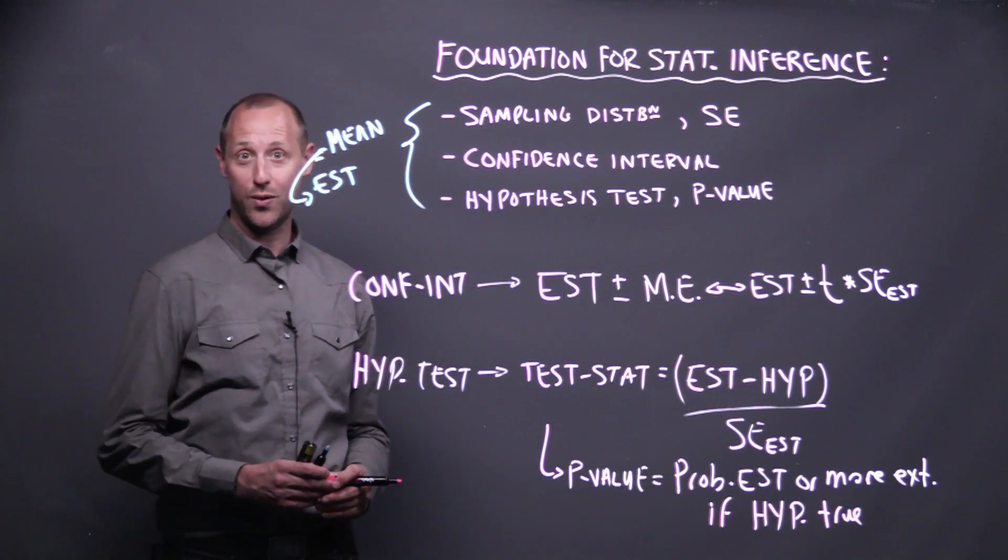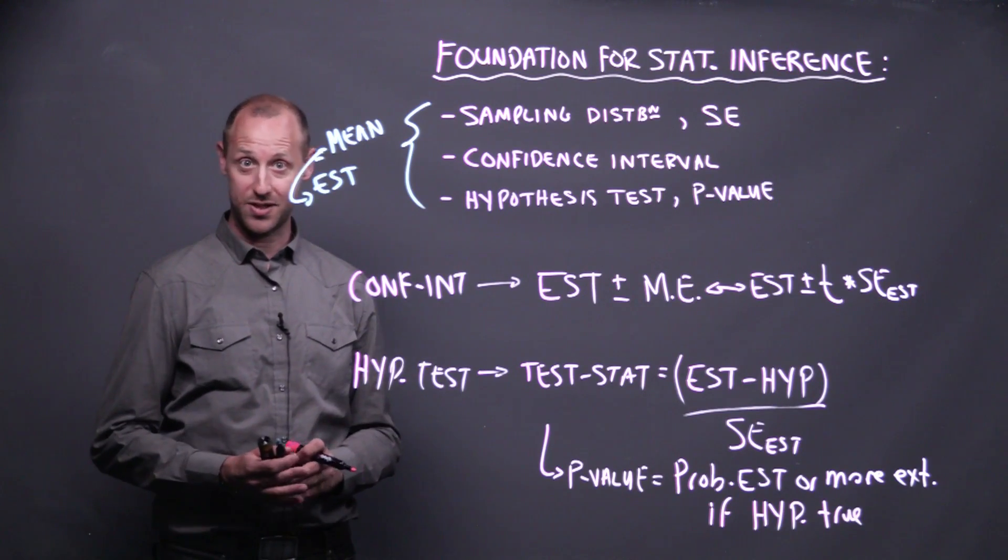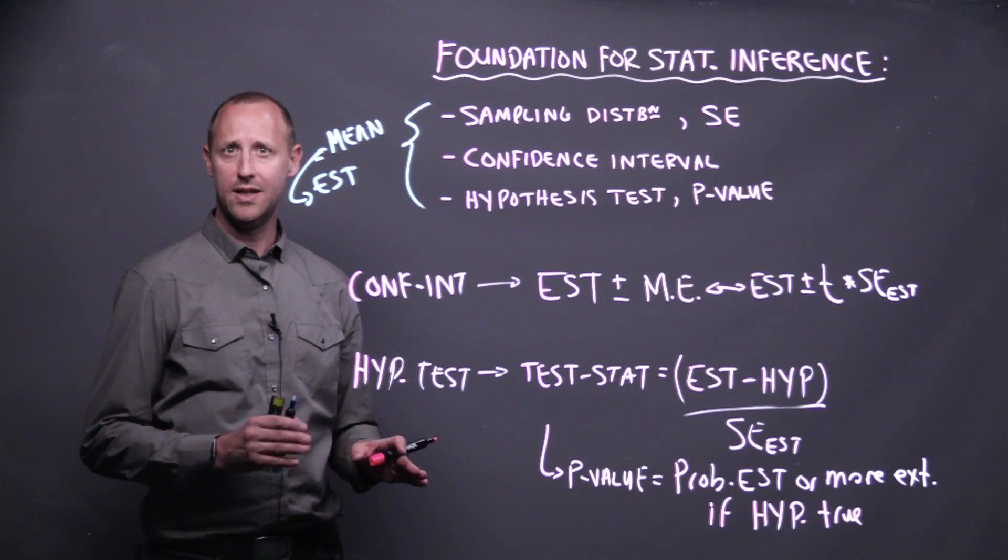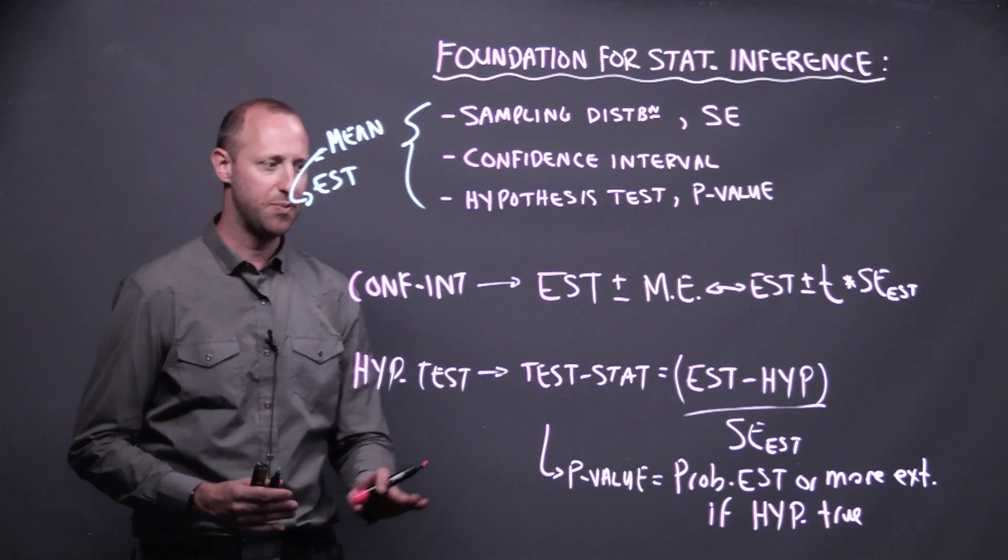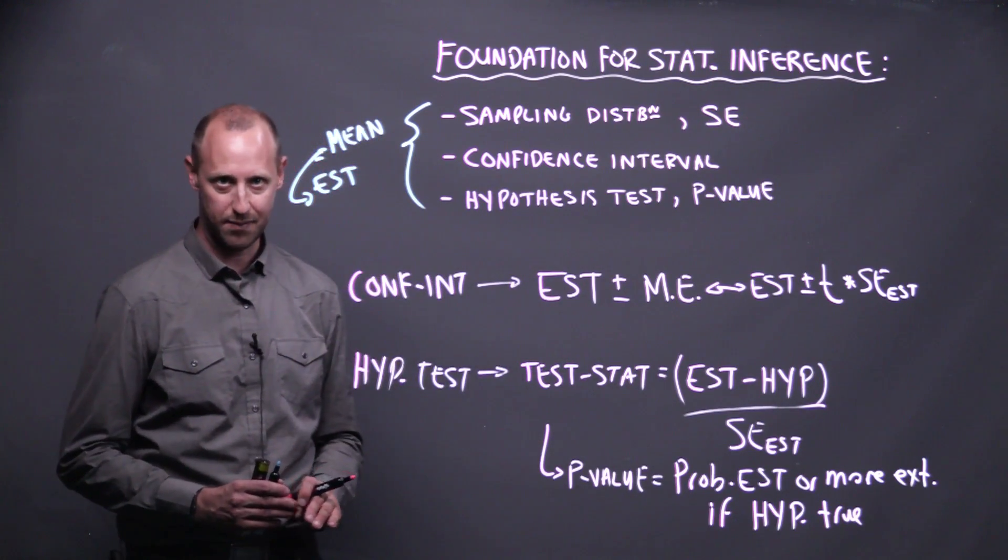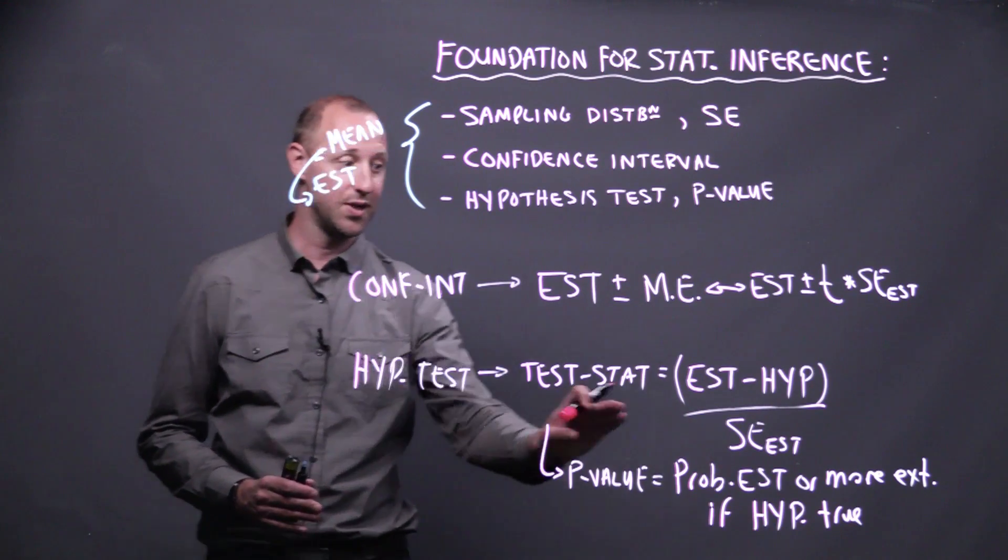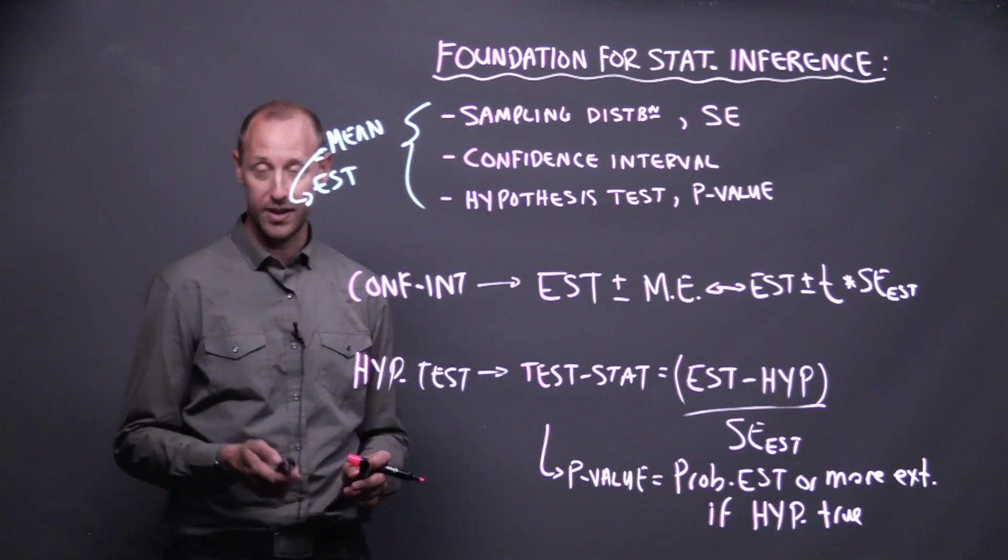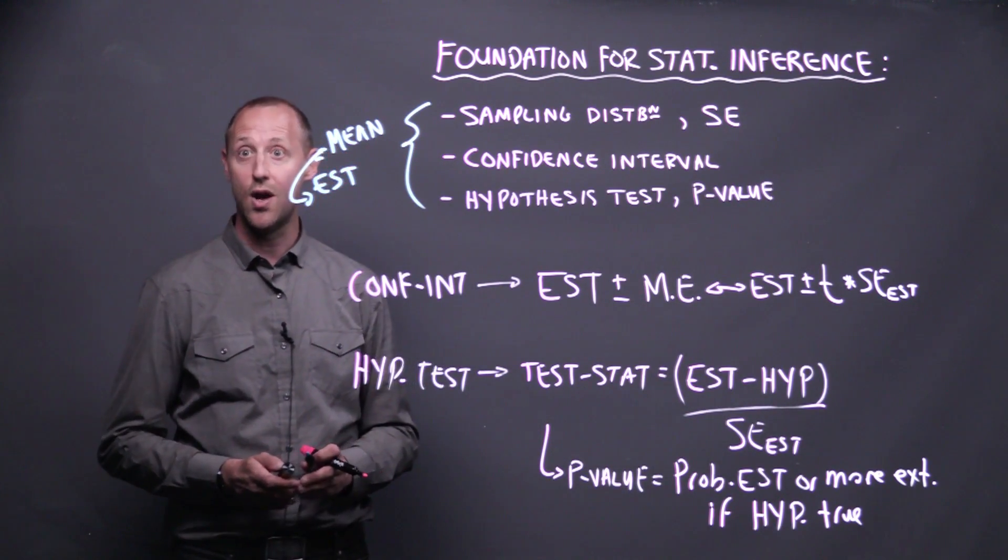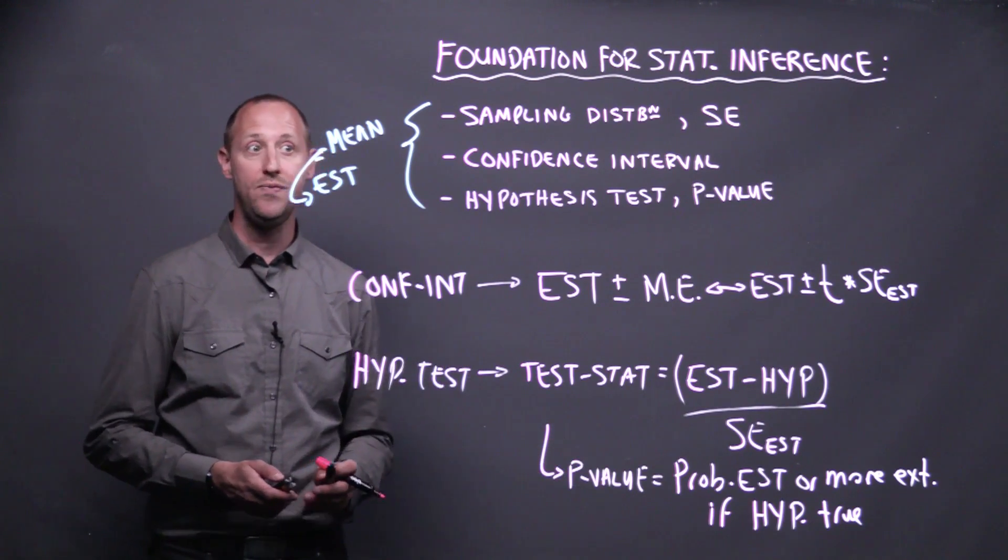And again, as you go through and learn different hypothesis tests and different approaches, the mechanics and some of the parts change, but the underlying concept is always the same. The p-value, regardless of how we're trying to get it, is always trying to tell us what's the probability of getting the estimate we got in our data, or one even further from the null, if the null is true.